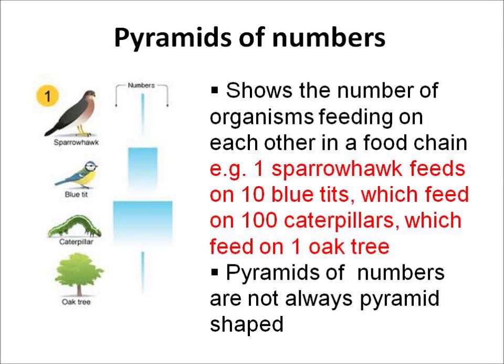We can show the different numbers of organisms feeding on each other in a food chain by drawing a pyramid of numbers. In the example here, one sparrowhawk feeds on ten blue tits, which feed on 100 caterpillars, which feed on one oak tree. You need to know that pyramids of numbers are not always the shape of a pyramid.